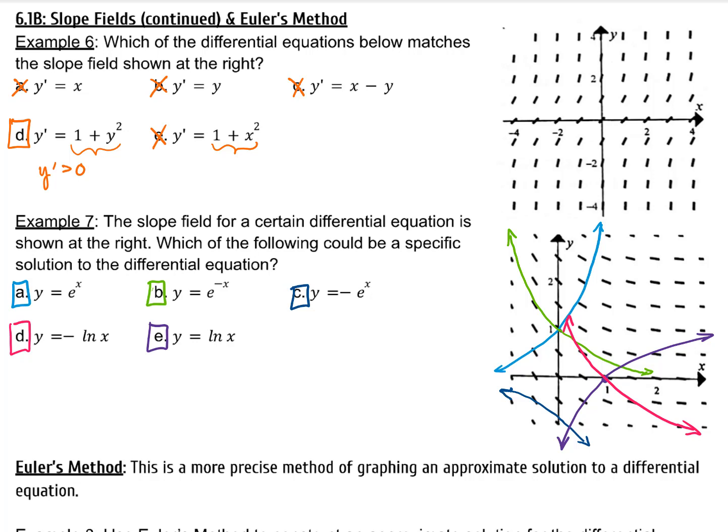B and D are the closest options, but B is the only correct option. D has a vertical asymptote here, but the slope lines are crossing the y-axis, so D cannot be the answer.